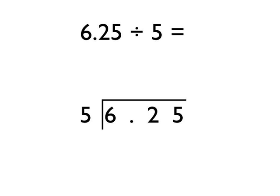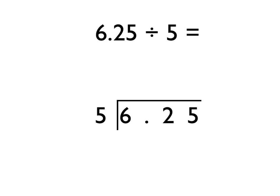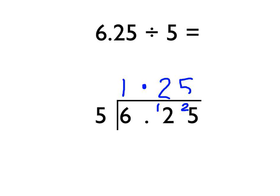For one final example, I want to show you how you can divide a decimal number by a whole number using short division. We're going to do 6.25 divided by 5. As before, make sure we put our decimal point ready in our answer box. How many times does that 5 go into 6? It goes in once with 1 remainder. How many times does 5 go into 12? It goes in twice to make 10, with 2 remainder. And to finish off, how many times does 5 go into 25? It goes in 5 times — 5 times 5 is 25. So the answer is 1.25.